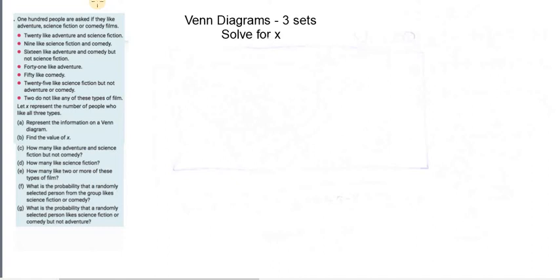In this video we're going to be trying to solve Venn diagram questions, the type of question when you're asked to find the value of some missing information. It could be something along the lines of let x be the value of - here we go - let x represent the number of people who like all three types. These are different types of comedies and movies I think, and we've defined a value. So it's one type of question.